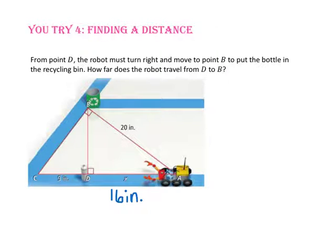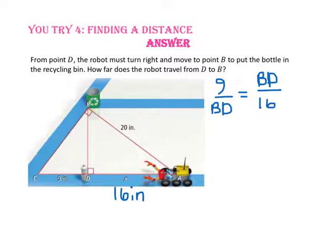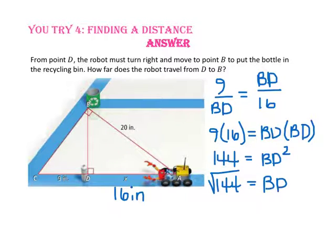Pause the video and do you try number 4. From point D, the robot turns right and moves to point B. Since X equals 16 inches and segment BD is the altitude, BD is the geometric mean of segment DC and segment DA — that is, 9 and 16. Using cross products: 9 times 16 equals BD squared; 144 equals BD squared; taking the square root, BD equals 12. The robot travels 12 inches from point D to point B.